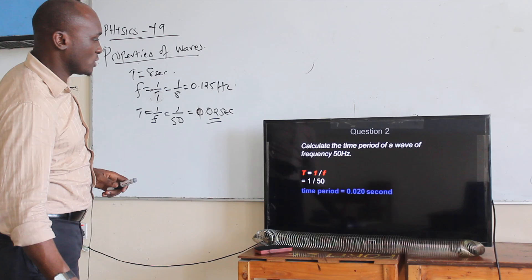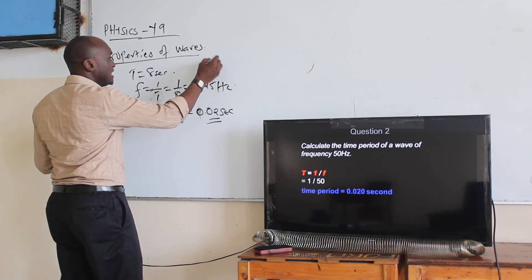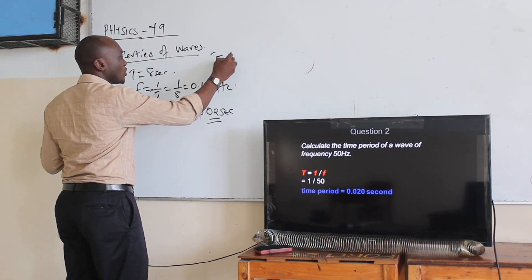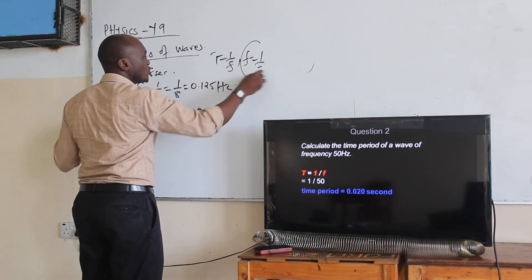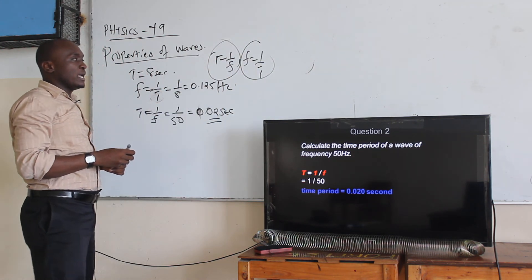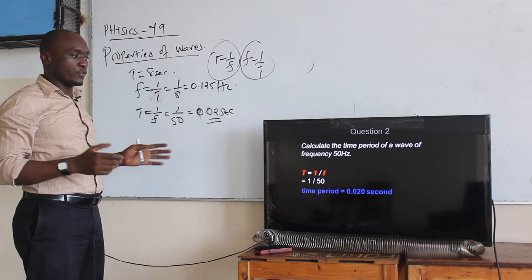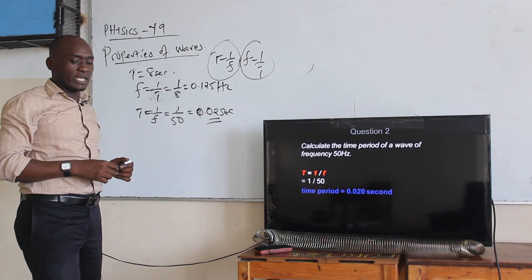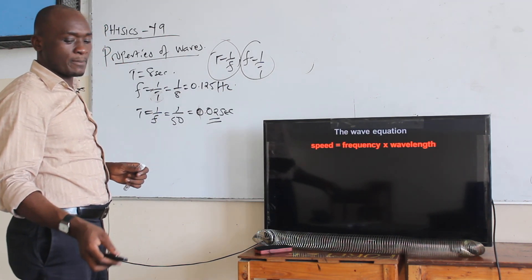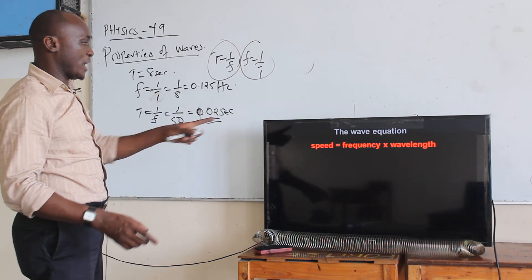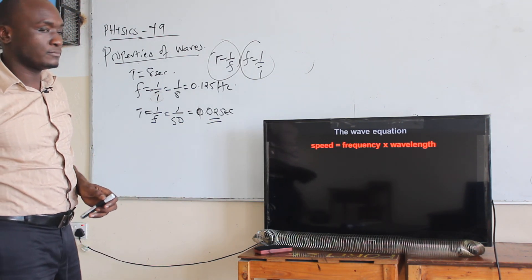Just before we go to the wave equation, I want to emphasize that T equals one over F and F equals one over T. Once you know that frequency and time period are related, it will be very easy to move to the next part. In our next lesson, we are going to discuss the wave equation. Thank you.